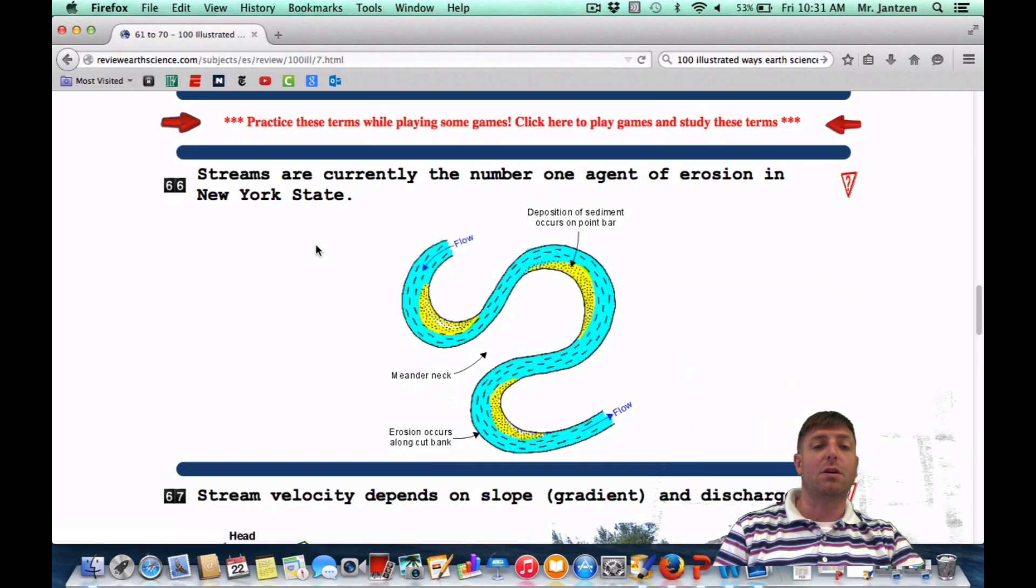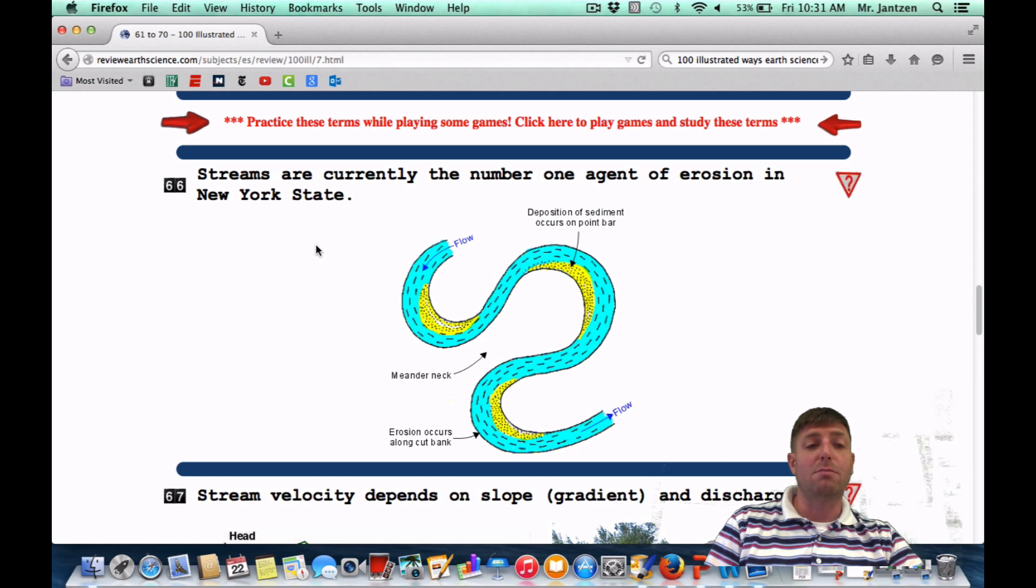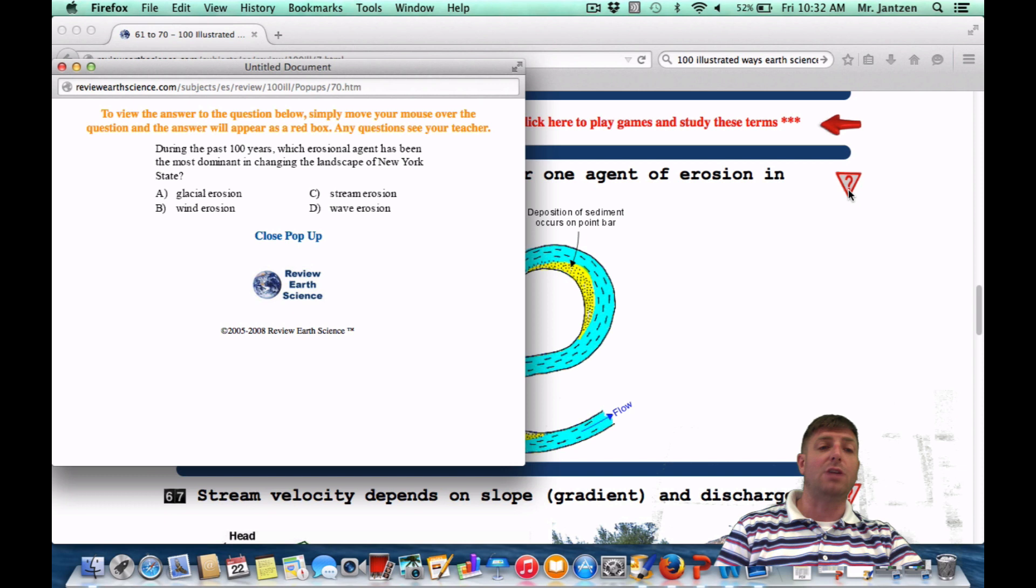Number 66: Streams are currently the number one agent of erosion in New York State. Streams move a tremendous amount of sediment. Once again, here they're kind of showing you that on the outside, the cut bank, there's erosion. On the inside, there's deposition. Other points you want to memorize about a stream, but yes, water streams, number one agent of erosion.